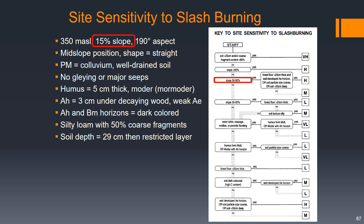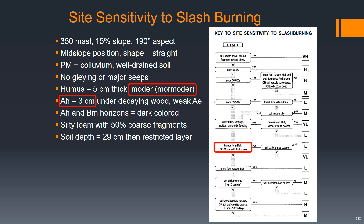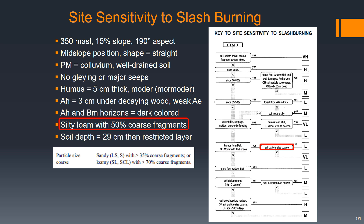Continuing through the key: is the slope 50 to 80%? No. 33 to 50%? No. Is there a water table, seepage, mottles, or periodic flooding? No, we did not have that. Is the humus form a mull or a moder with an AH horizon? Yes — we had a humus form of a moder with a thin AH horizon. Is the soil particle size coarse? We had a silty loam with 50% coarse fragments, so that is not coarse by this definition. This leads to a slash burning sensitivity of very low for our site.